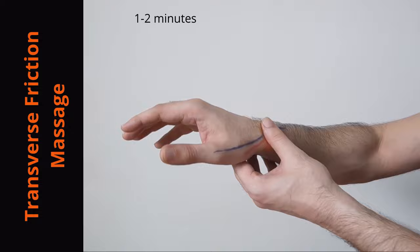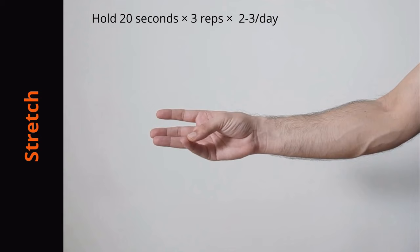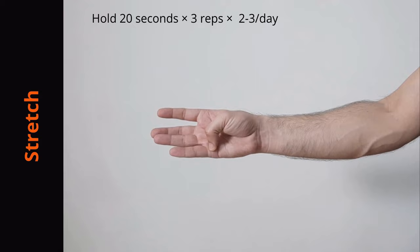Next is a mild stretch. Bring the tips of the thumb and little finger together. Then slide the thumb to the base of the little finger and hold. Wrists need to be in a neutral position.